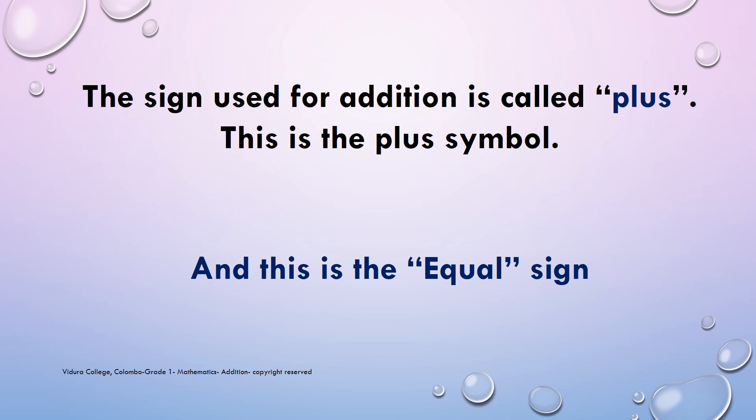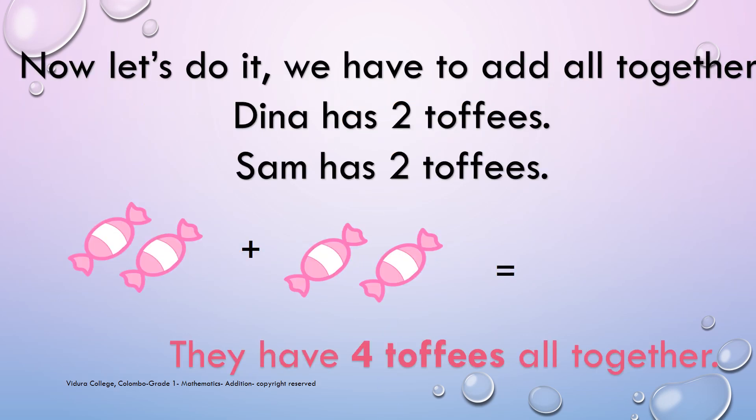Children, Addition means the action or process of adding something to something else, like we add the toffees that Dina and Sam had. When it comes to Addition in writing, there is a special symbol which indicates Addition. We call that the Addition Mark or Plus Mark. Here it is. And this is the equal sign. Now we will do some Addition with the Addition Mark.